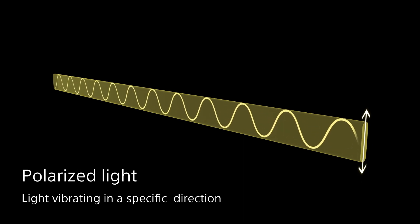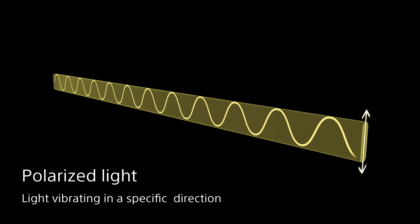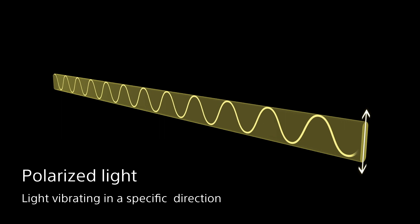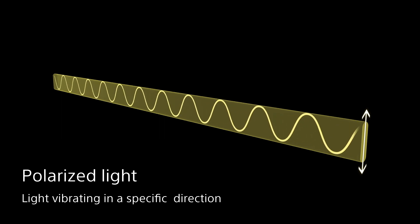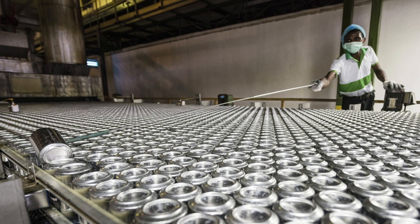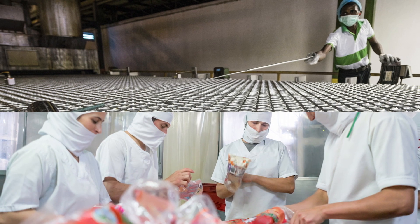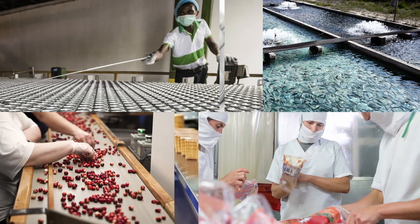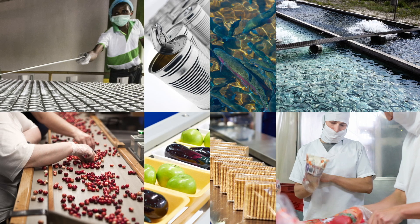On the other hand, light vibrating in a specific direction is called polarized light. Unlike brightness or colour, polarisation can't be detected by conventional image sensors or human eyes.